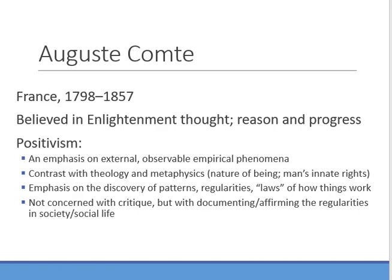The initial sociologist did not create so much distance between himself and the world he inherited. Comte wrote in France from 1798 to 1857. He believed in Enlightenment thought, reason, and progress, but also thought that sociology would become the queen of sciences and the religion of the secular world. His emphasis was on positivism — he believed society was as real and concrete as a table, emphasizing external, observable, empirical phenomena, contrasted with theology and metaphysics. Positivism was concerned with discovering patterns, regularity, and laws of how things work, not so much with critique but with documenting and affirming the regularities in social life.